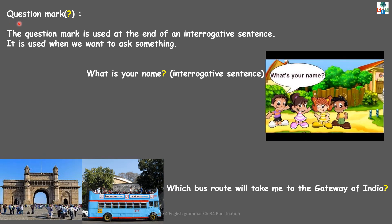Another punctuation mark is the question mark. The question mark is used at the end of an interrogative sentence — when you want to ask something. For example: 'What is your name?' It is an interrogative sentence. Second example: 'Which bus route will take me to the Gateway of India?' You are asking for the bus route, so this is also an interrogative sentence. When you ask something, we use the question mark at the end of the sentence.